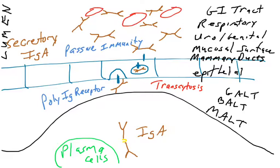So these are two ways where IgG and IgA can be transported and help protect various sites in the body.